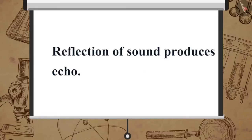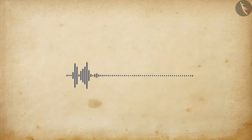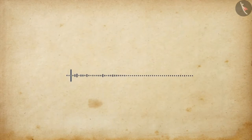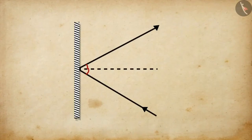Now let us learn how reflection of sound produces echo. When you clap your hands near a reflecting surface like a mountain, you will get to hear the same sound a little later. This sound which we hear is called an echo. Echo takes place as the sound is reflected back after hitting a reflecting surface.